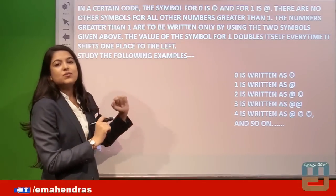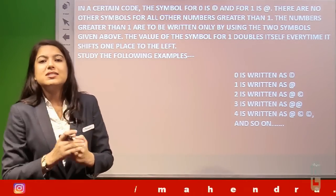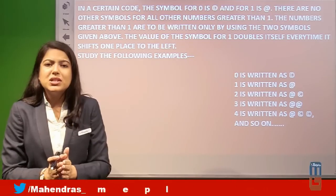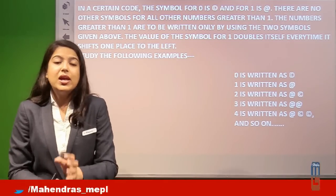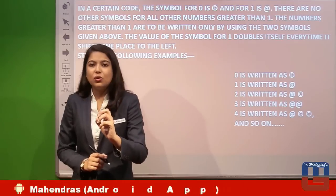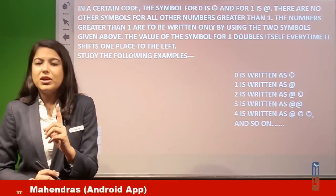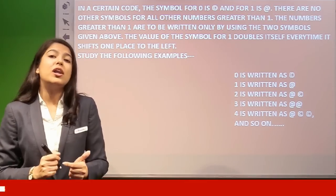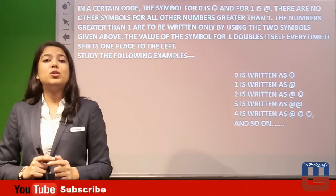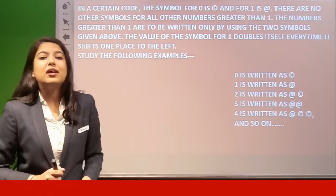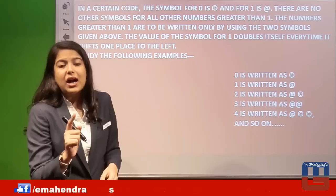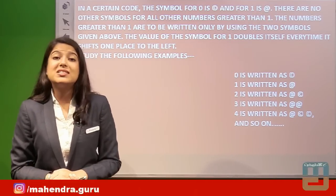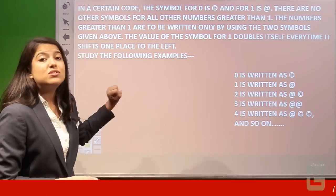Let us quickly read the instructions given in this question. In a certain code, the symbol for 0 is © (copyright) and for 1 is @ (at the rate). There are no other symbols for all numbers greater than 1. This means we have to use only these two signs — copyright and at-the-rate — for all numbers.